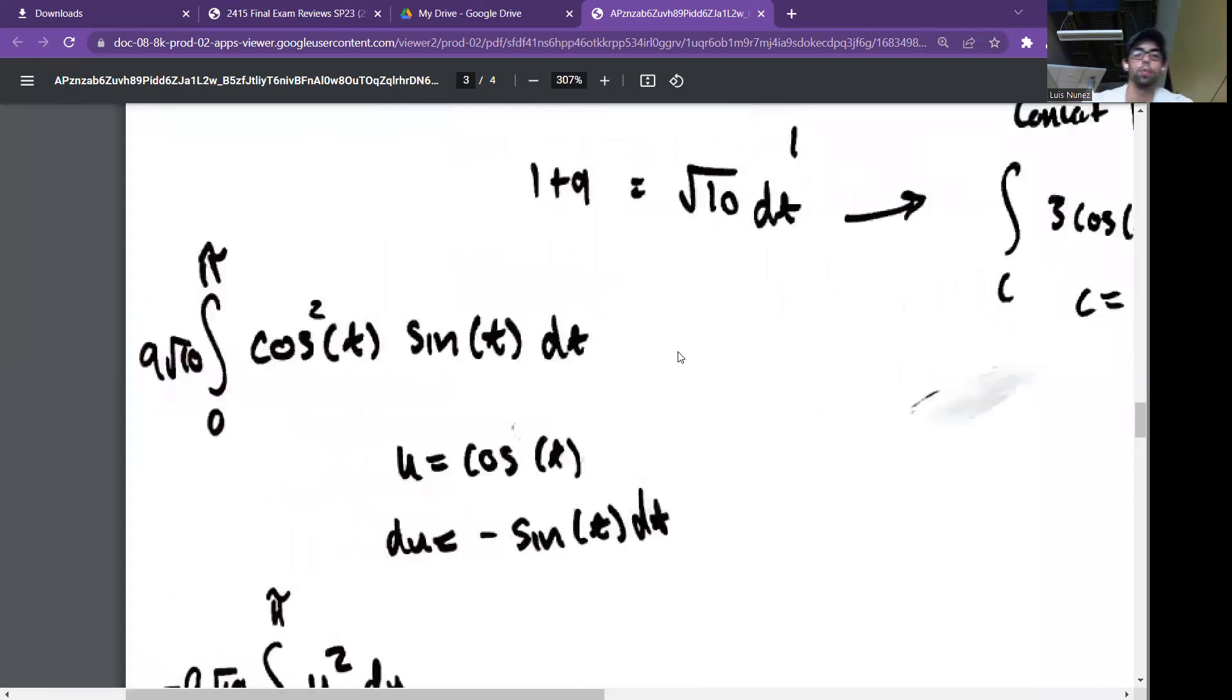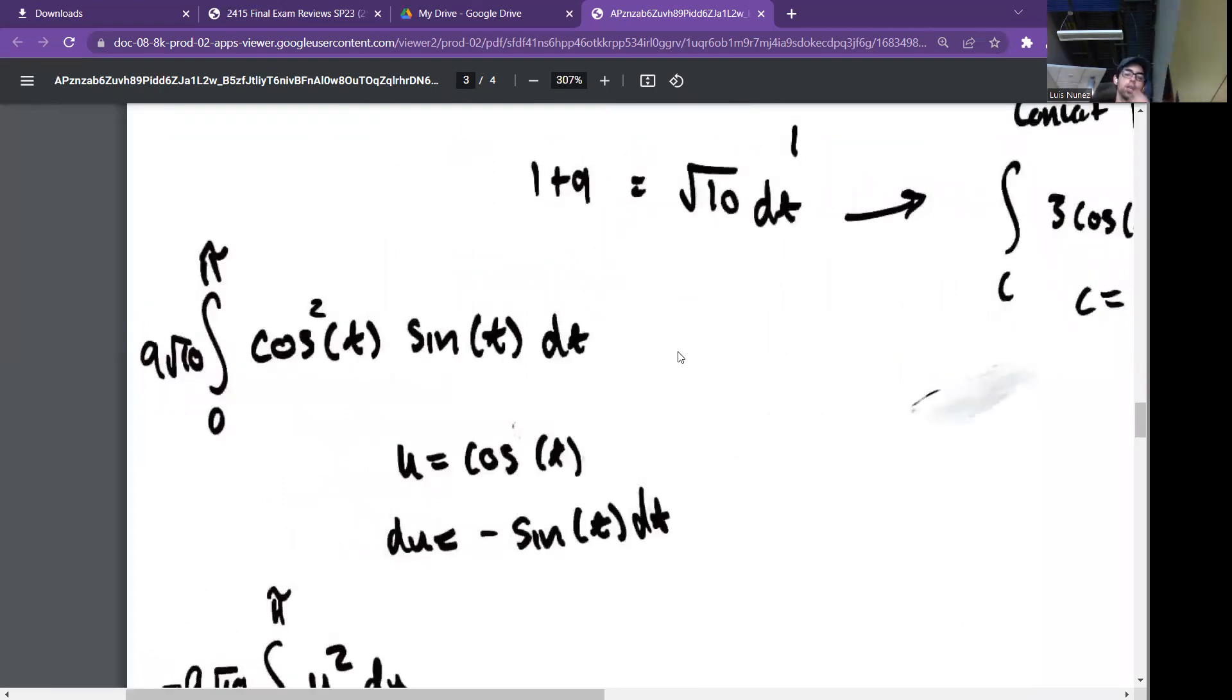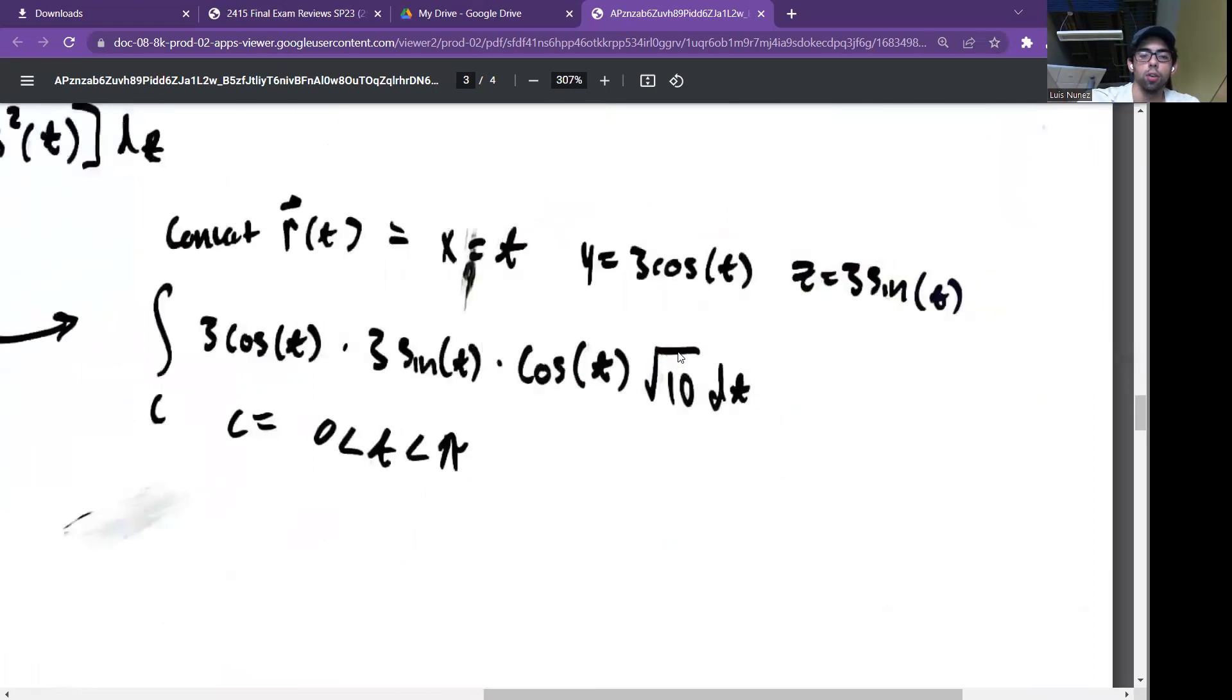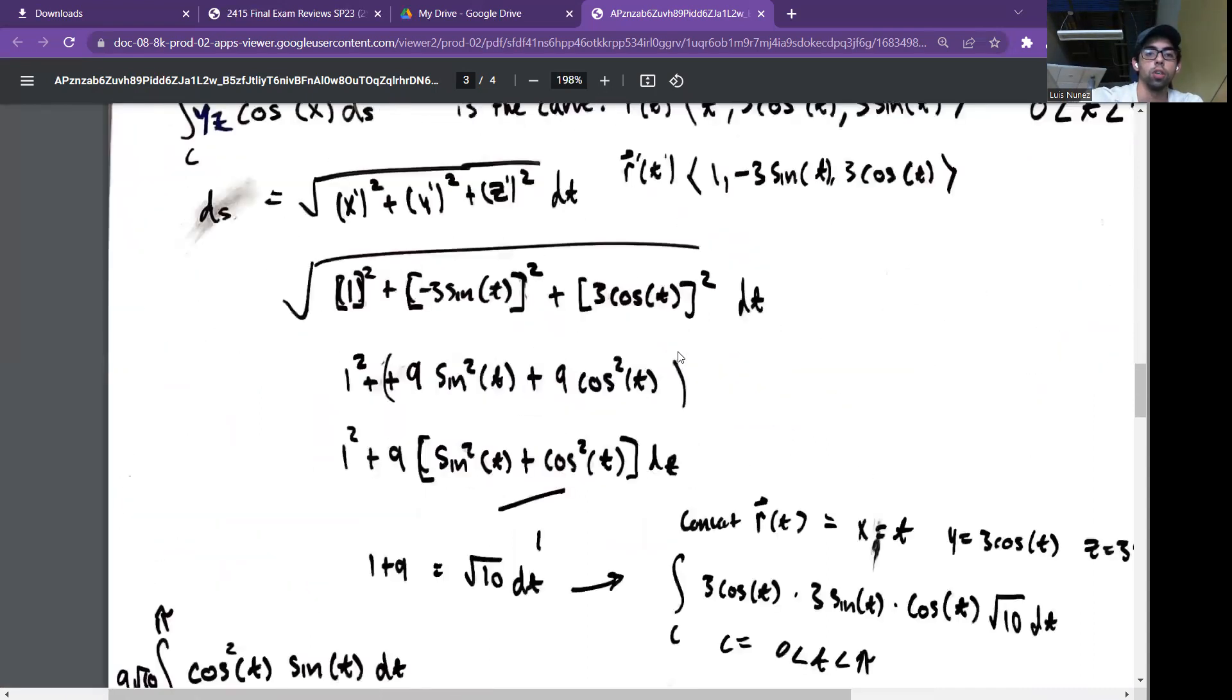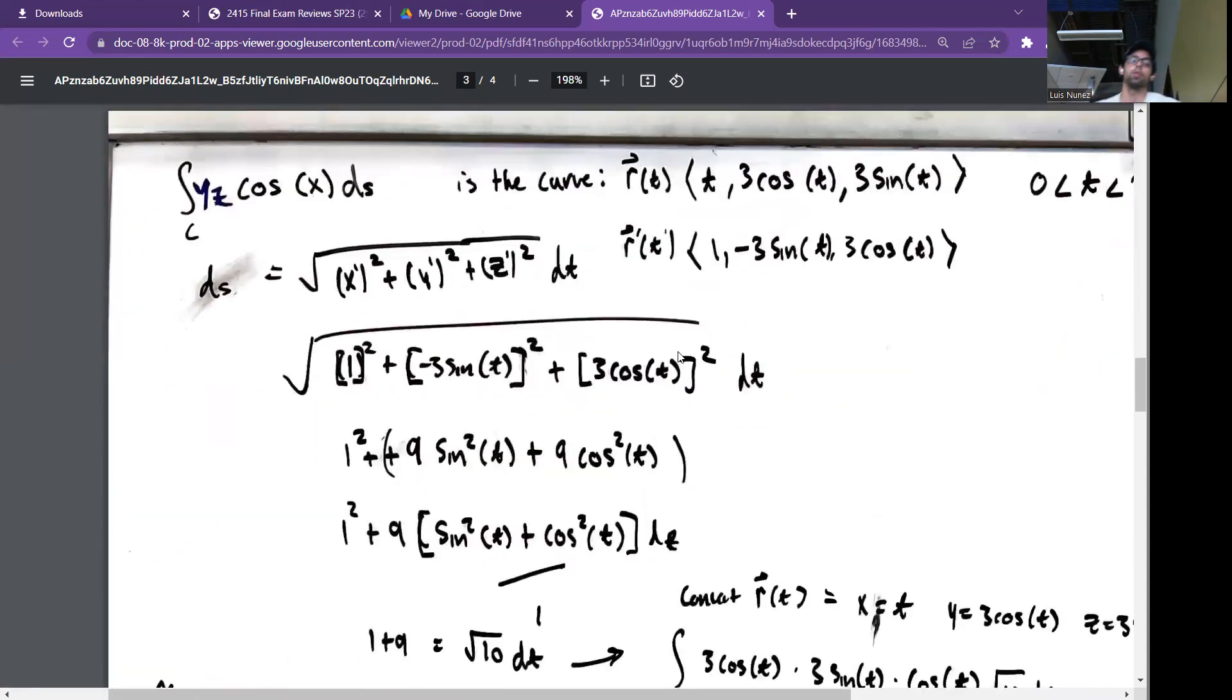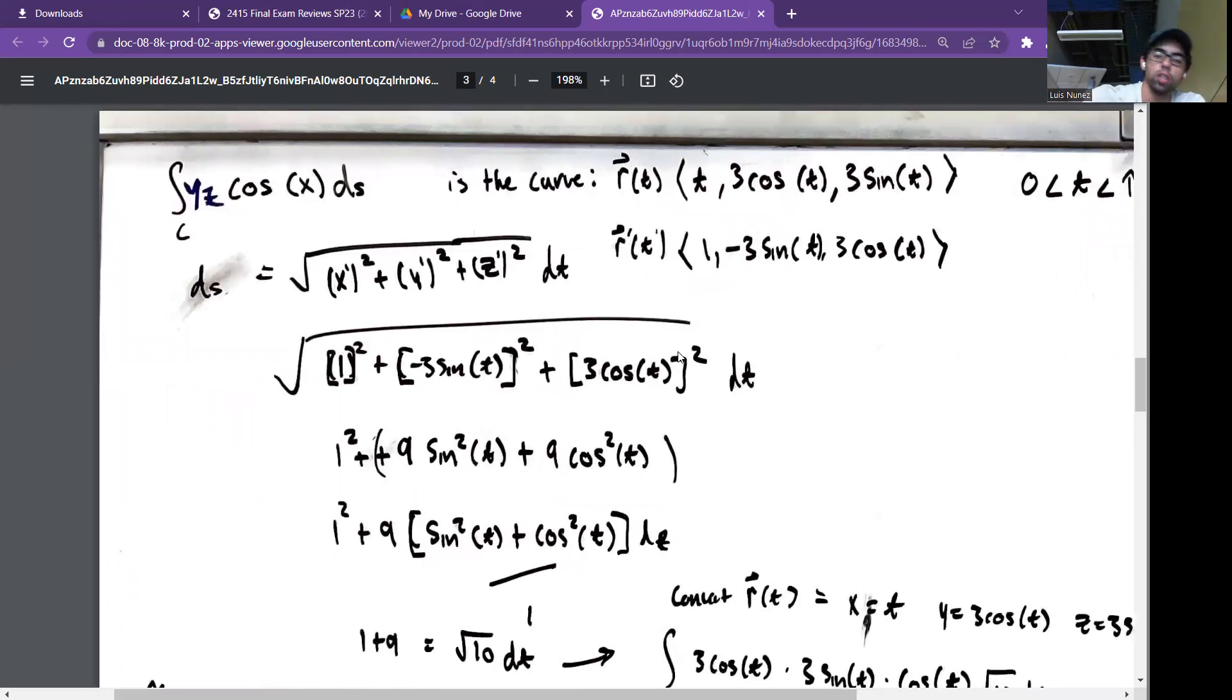I ended up taking the constant square root of 10 out, so I got square root of 10 times the integral of 9 cos t sin t dt. Actually, I feel like I didn't go over this as well as possible. That's my X component, Y component, and Z component. My original function was the integral over C of Y Z cos(x) ds. So I just put the vector solution inside.